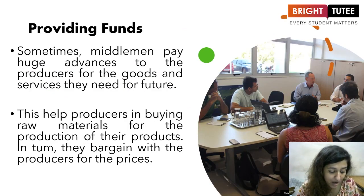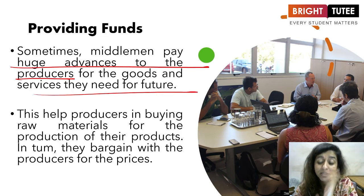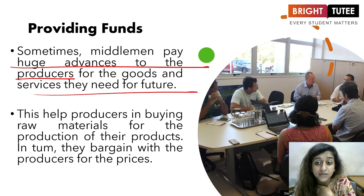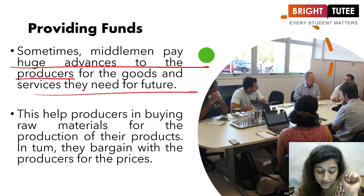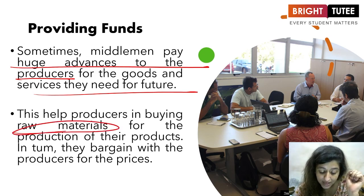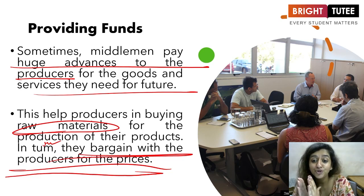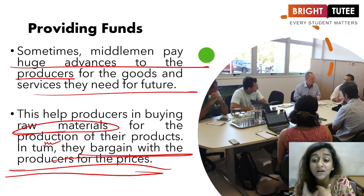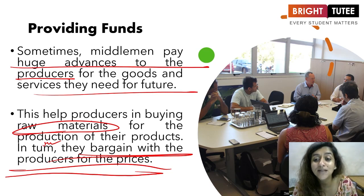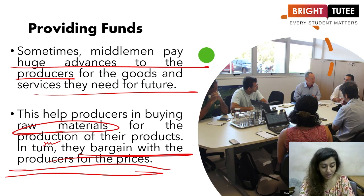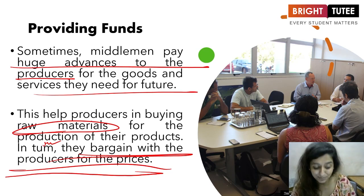Another role is providing funds. Sometimes middlemen pay large advances to producers for the goods and services they need, helping producers buy raw materials for production. In turn, the middlemen bargain with the producers on the price, since they supported them financially when it was required. This is how the role of providing funds comes into play, and this is where the concept of wholesalers is explained.